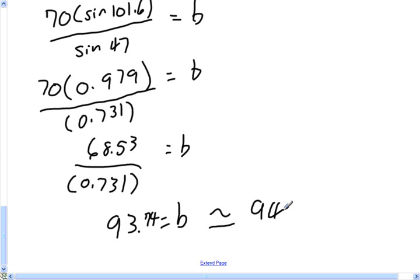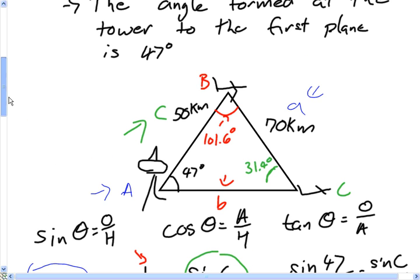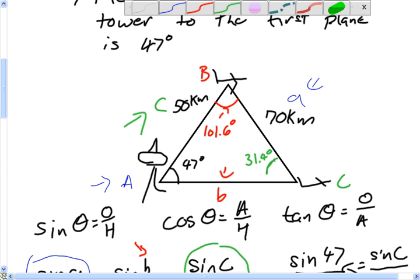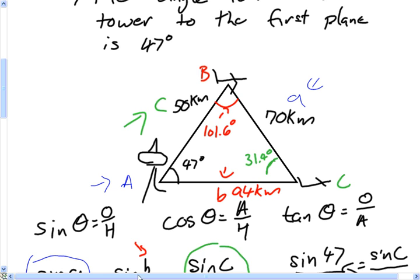So in other words, this is roughly 94 kilometers. All the way back at the top, we discovered that plane C is 94 kilometers away from the tower.